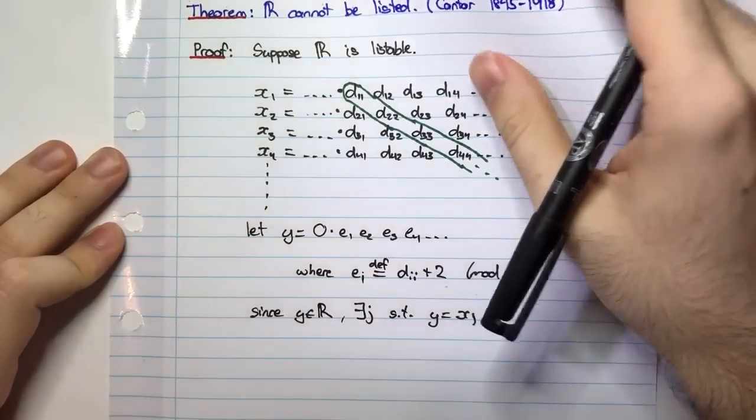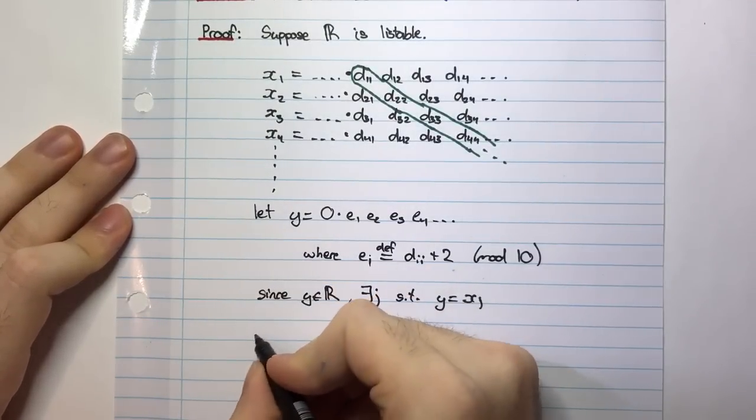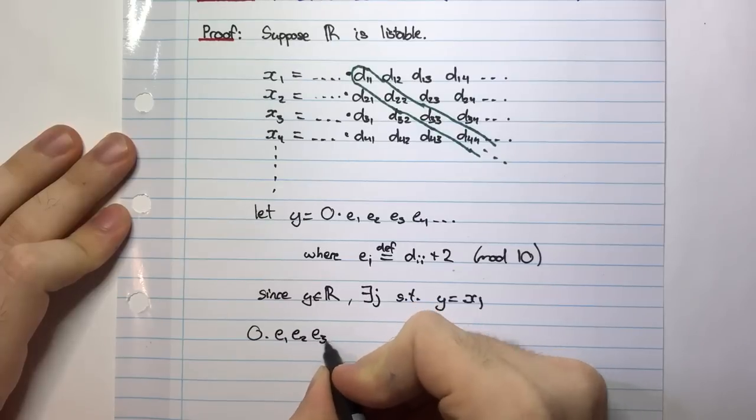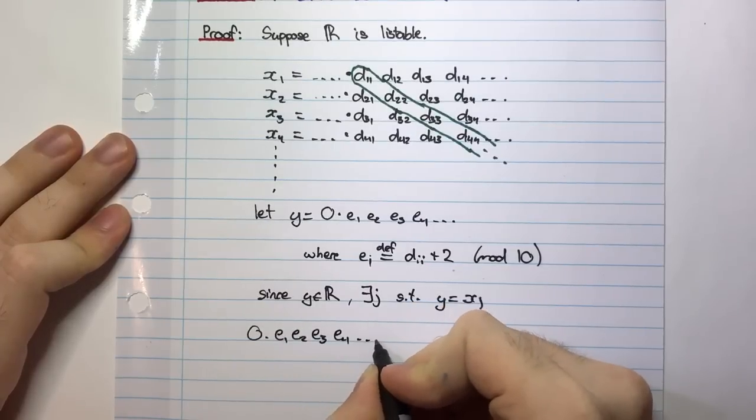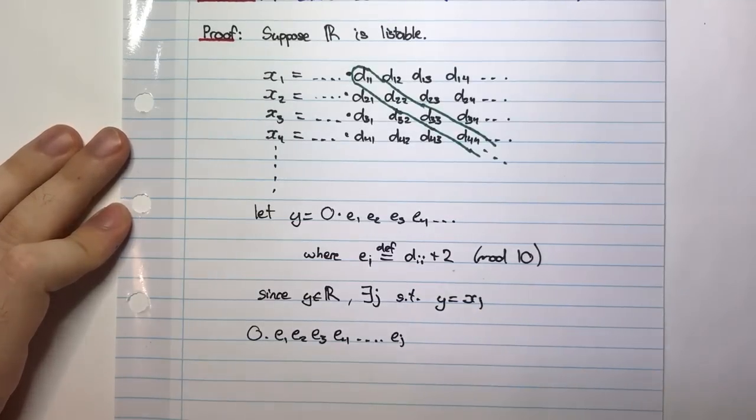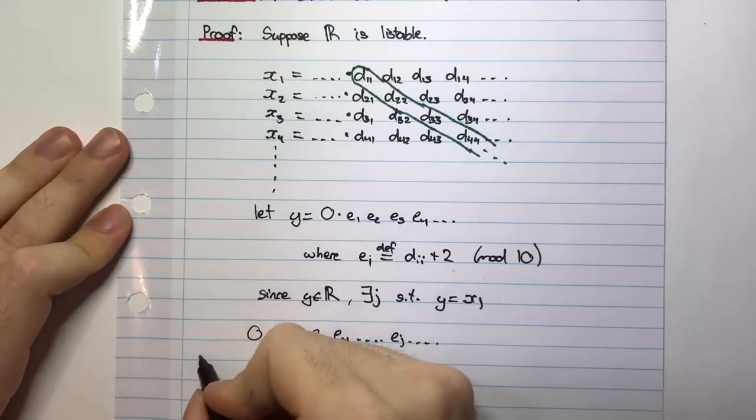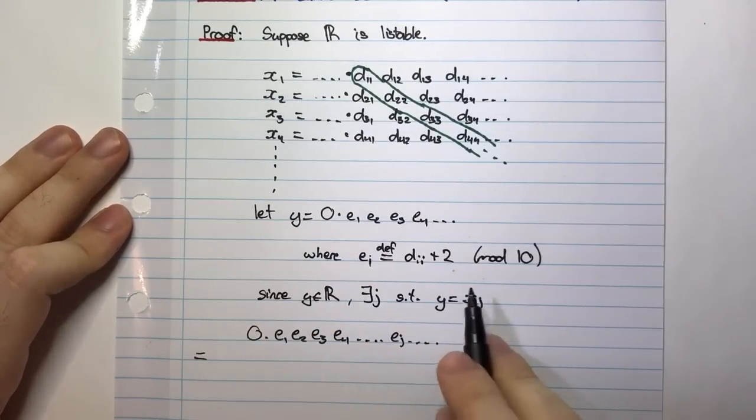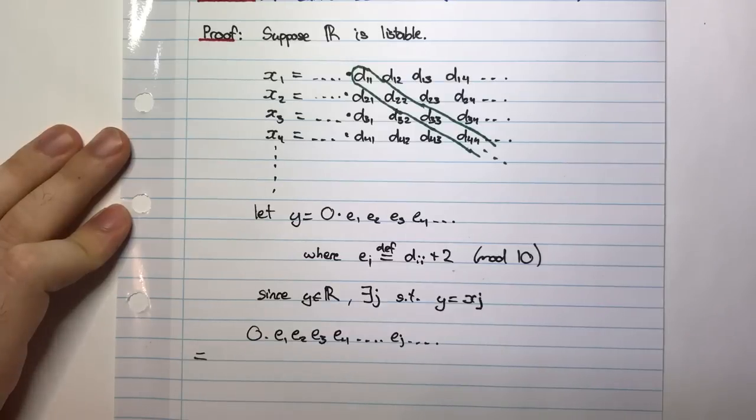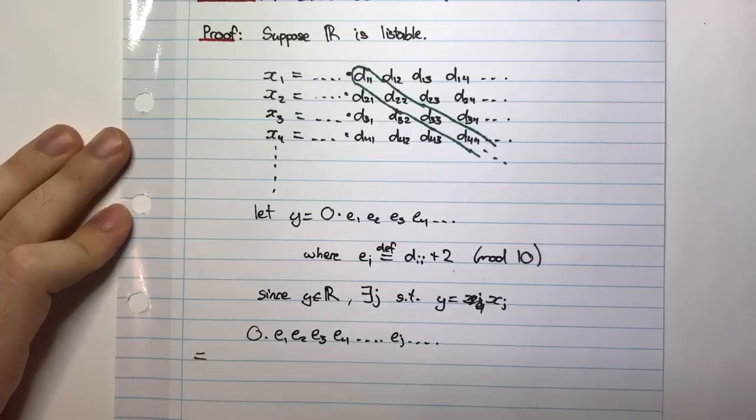So if that is the case, then that means that my number Y, which is 0.e1, e2, e3, e4, I'm going to continue. I'm going to write the EJth digit and then continue on. That should be equal to whatever XJ is. Now this is a bit hard to see, XJ. That's a subscript, not times. So let me maybe write it like this, XJ.